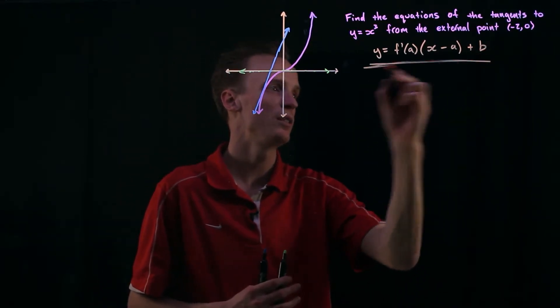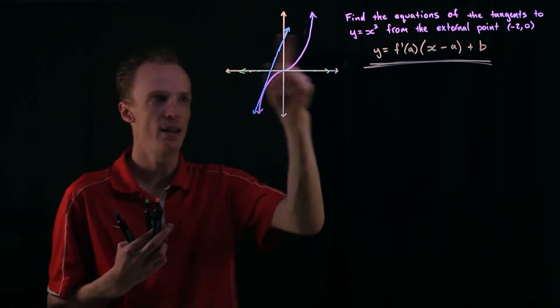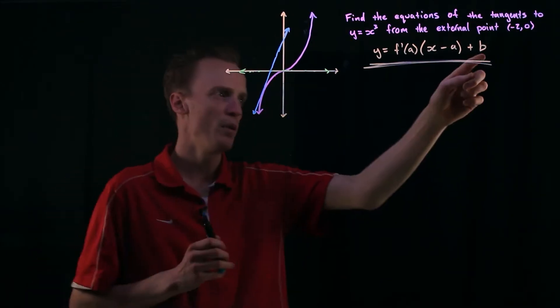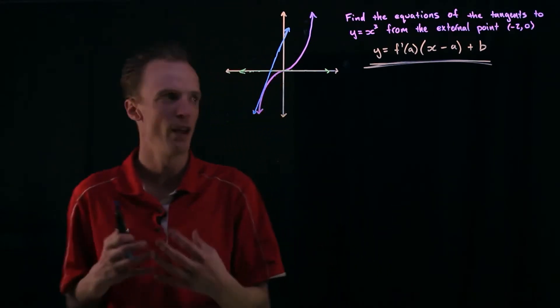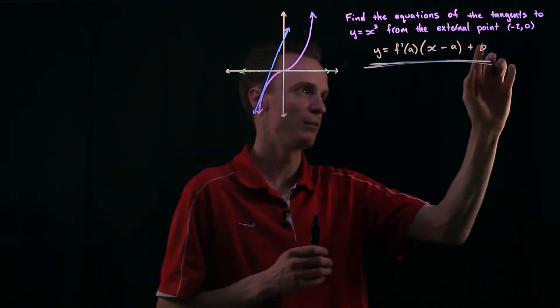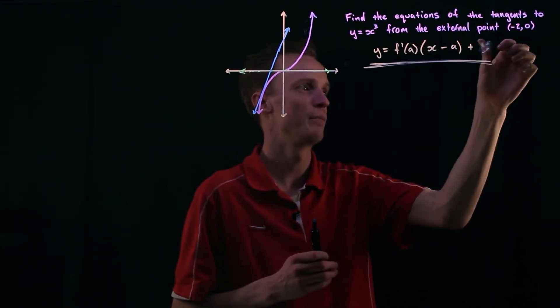We're going to use this here to be able to describe any line that we can draw at this point. Keep in mind this point of b is also the f of a so you might actually see this written as, I might put it here now,